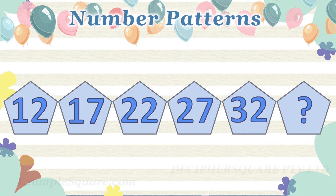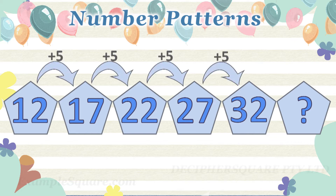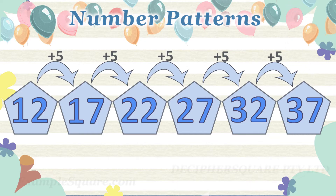In this example, the first number given is 12. And then each number is exactly 5 more than the previous number. So the next number in the pattern should be 32 plus 5, that is 37.